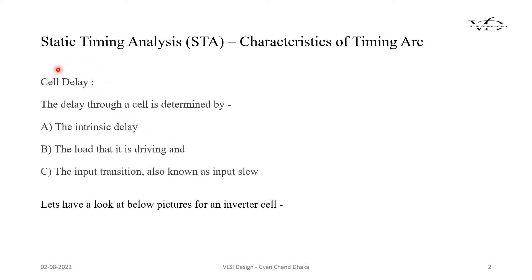The delay, or cell delay, of a particular cell is determined through three factors. The first is the intrinsic delay. The second is the load that a particular cell is driving. And the third is the input transition, also known as input slew. These three parameters basically affect the total cell delay.